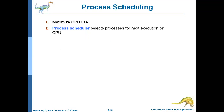The process scheduler is the one which selects the next instruction to be executed by the processor. To do this, the process scheduler maintains several types of queues. What are the queues the scheduler maintains? That we will be discussing now.